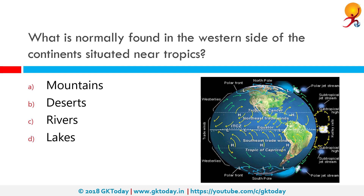What is normally found on the western side of the continent situated near tropics? Most of the world's deserts are found on the western margins of continents in the subtropics because the prevailing winds in the tropics are tropical easterly winds. The tropical easterly winds become dry by the time they reach the western margins of the continents and so they bring no rainfall.